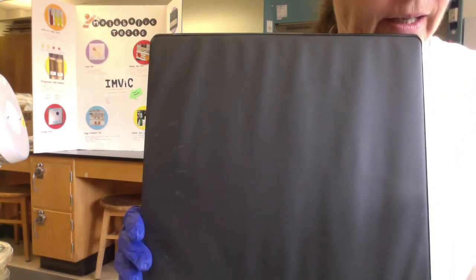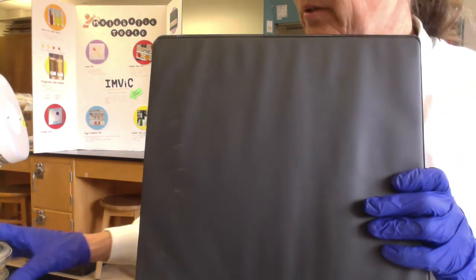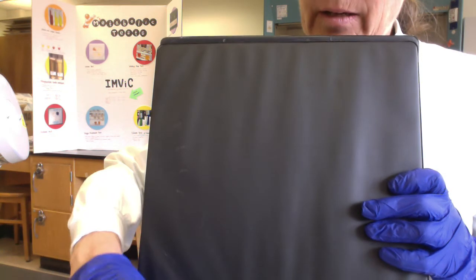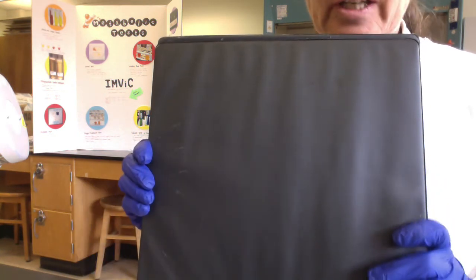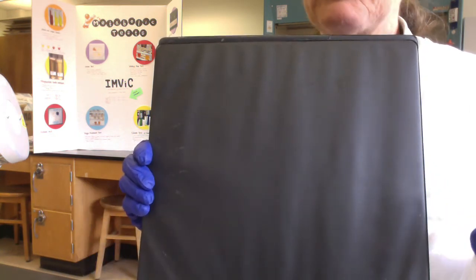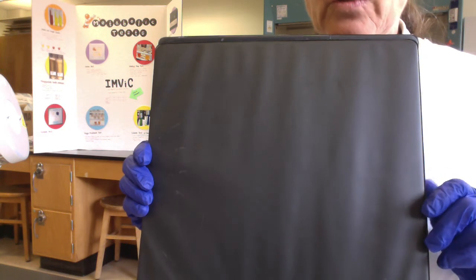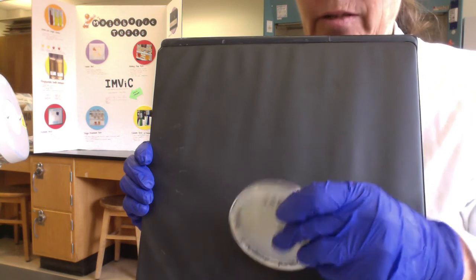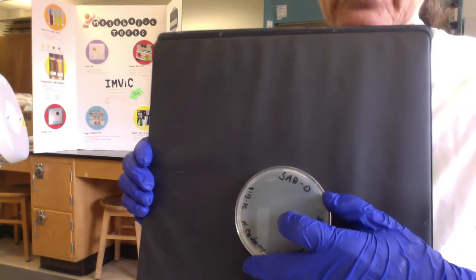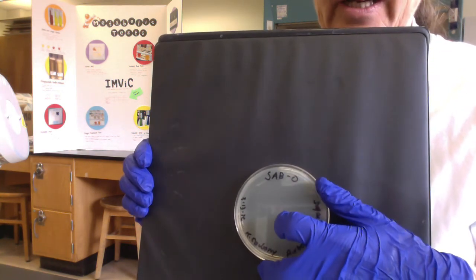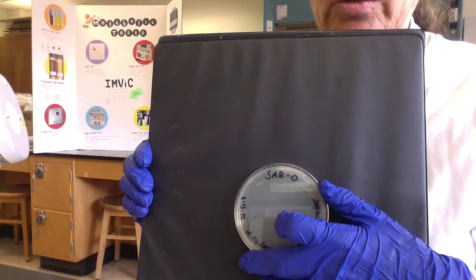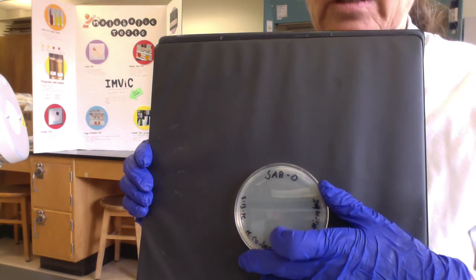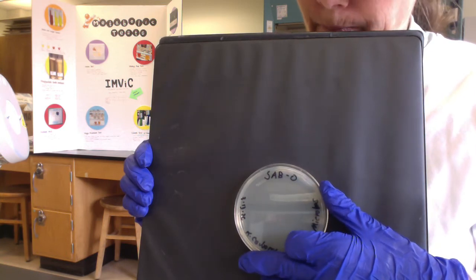And then, folks, we would predict on our Saborodextrose media, we would predict we'd see fewer colonies. And the reason is, remember, the tryptic soy agar, it's all-purpose. It should grow a wide range of both bacteria and fungi. In contrast, the Saborodextrose, it's selective for fungi. Through the high dextrose or glucose concentration and the low pH, we're going to inhibit a lot of bacterial colonies.